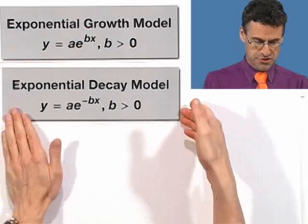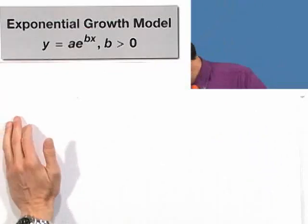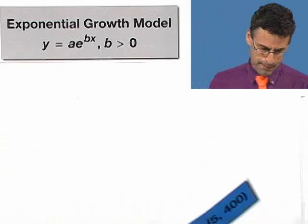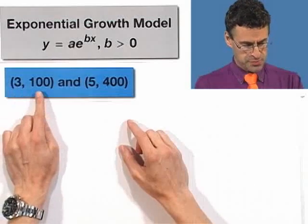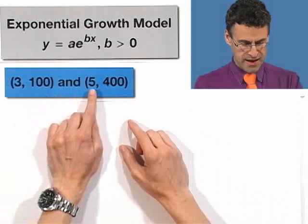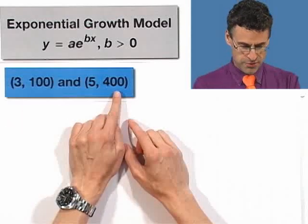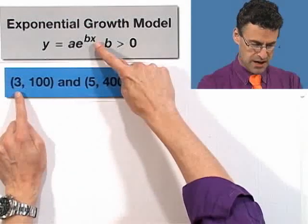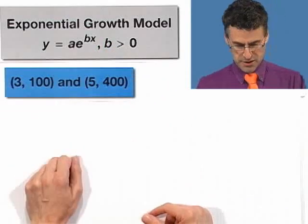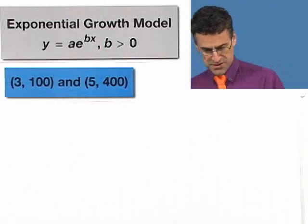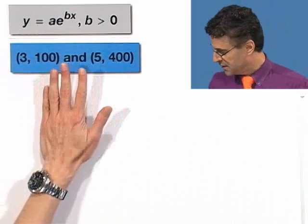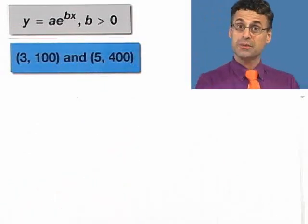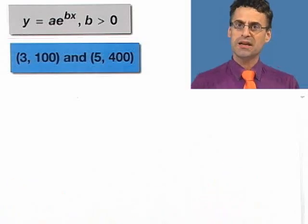Let's assume that the growth follows the exponential growth model, which is a reasonable assumption, by the way. Our job is to predict the number of bacteria in the culture after six hours, and then using this model, see if we can find the time when we will have a population of 10,000 bacteria. This is a growth model, so we're actually going to use the exponential growth.